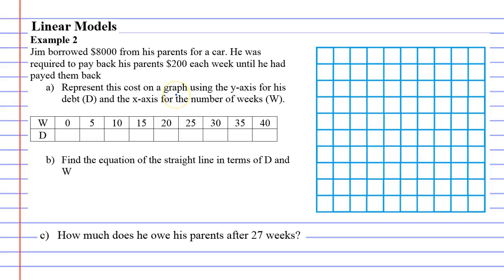Okay, so we'll start by filling in a table of values just to help us visualize what's going on here. So after zero weeks he still owes his parents $8,000 in debt. D for debt, W for weeks. How much does he owe them after five weeks? Well if he's paying them $200 a week, we multiply it by five, he will have paid them $1,000 off his loan. So he now owes them seven grand instead of eight.